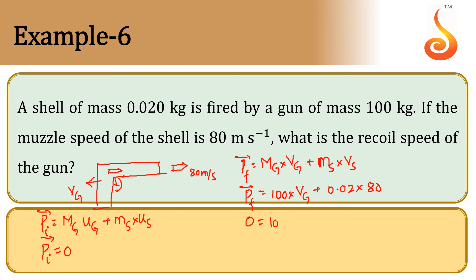So 0 equals 100 times velocity of gun plus 0.02 times 80, which gives 1.6.